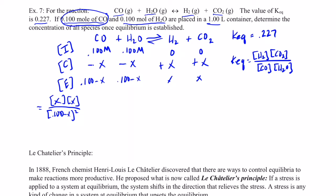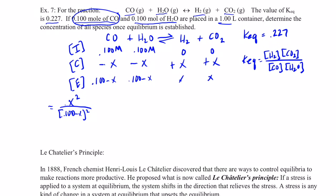In fact, I think we can change that numerator since it's just x times x. Let's just go ahead and make that x squared. And that equals our equilibrium constant of 0.227.